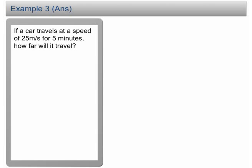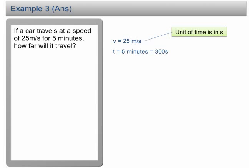To solve a physics problem, it's always a good idea to list down all the information given. In this question, we were told that the speed is 25 m per second and the car traveled for 5 minutes, which means the time is 5 minutes. We need to change the unit to seconds so that it is consistent with the unit of the speed. We are asked to find the distance traveled by the car.